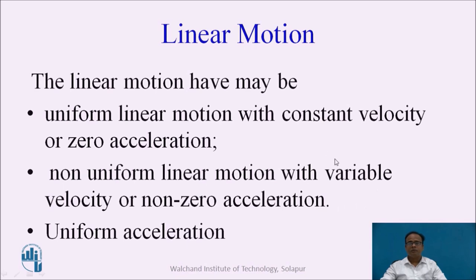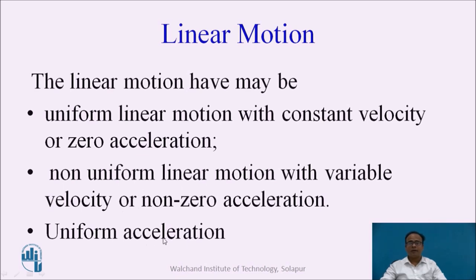Linear motion may be uniform linear motion with constant velocity or zero acceleration. Since the slope is zero, we have dv/dt equal to zero, meaning acceleration is zero. Non-uniform linear motion has variable velocity or non-zero acceleration, so acceleration is variable. The third case is uniform acceleration, where the body may have uniform acceleration throughout its motion.